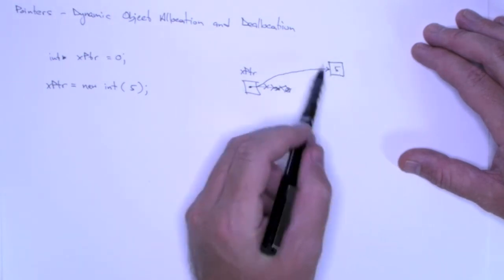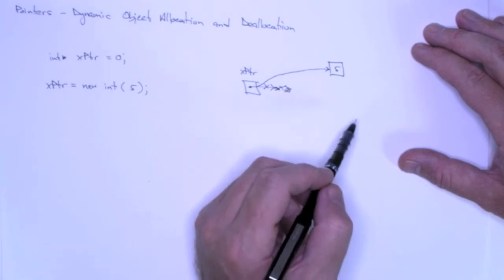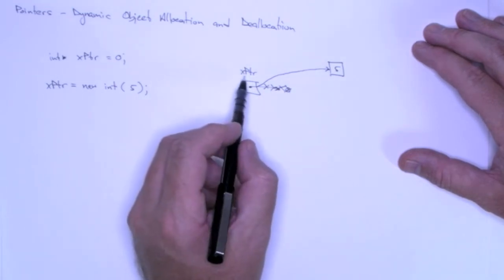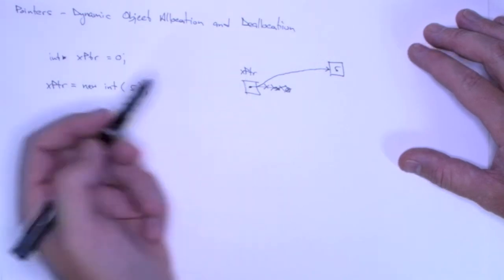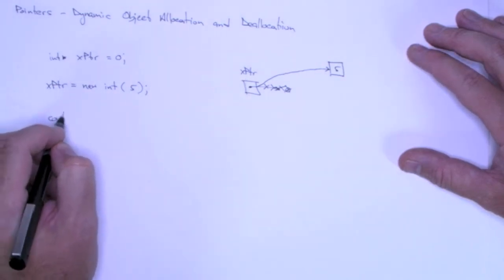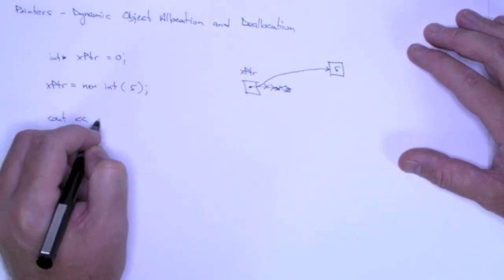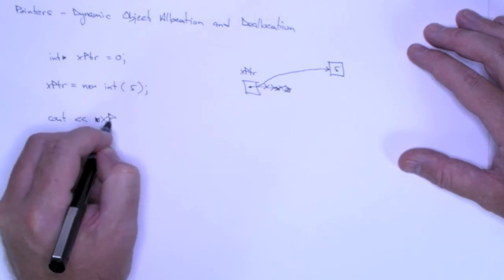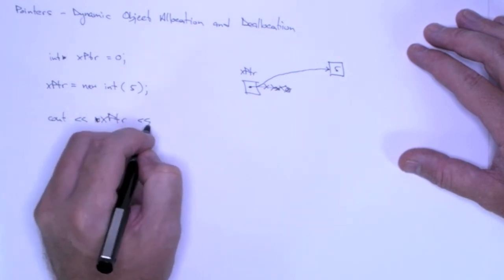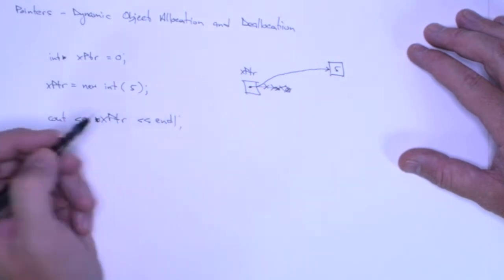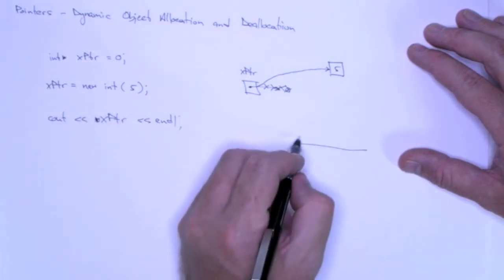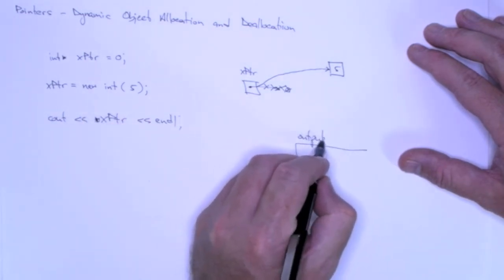Notice that there is no identifier for this dynamically allocated object. The only way we can get to it now is through x pointer. So if we say cout and we dereference x pointer, then the output will just be 5.